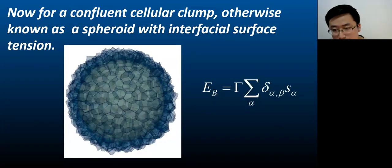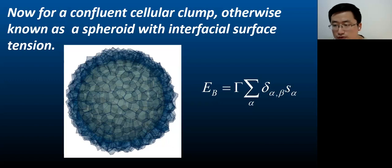While understanding bulk behavior is important, we now focus on confluent cellular collectives or clump of cells. We introduce boundary interfacial surface tension term into the energy functional. Here, the delta alpha beta equals to 1 if a phase alpha is at a surface of the collective, and 0 otherwise. So for the cells at a boundary of the cellular collective, there is an additional surface tension term for faces interacting with the vacuum or outer space. The factor gamma indicates the magnitude of this surface tension.